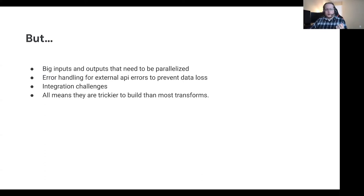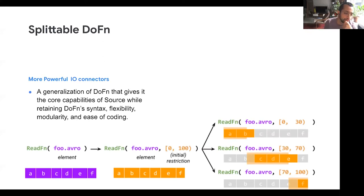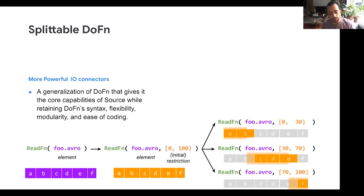Pablo is going to talk about how we deal with the parallelization challenge. In Beam historically we've had two abstract classes that users could implement to define a source — a bounded source class and an unbounded source class. These classes would address the different particulars of writing a source of each kind. When you're reading data from an external system, one of the first things you want to think about is how you're going to parallelize this reading.